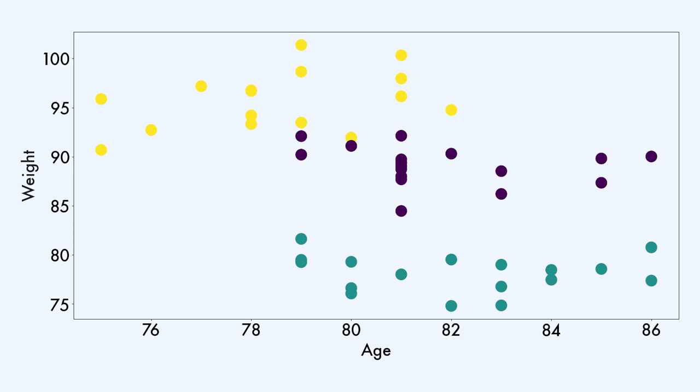What we know for sure is that we have three clusters in the data — we can see these three clusters in yellow, purple, and green. Let us now try to cluster the data based solely on the numerical features of weight and age, hiding the true groups and only giving the age and weight coordinates of each data point in the two-dimensional space.